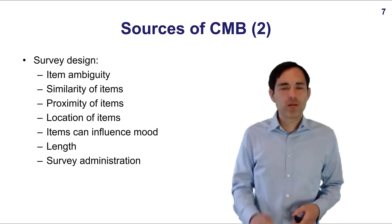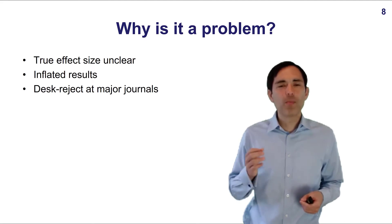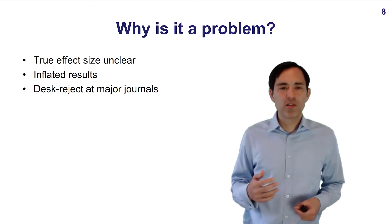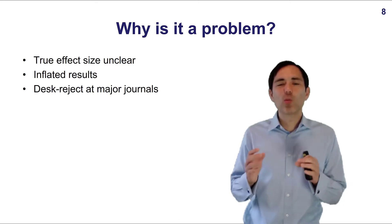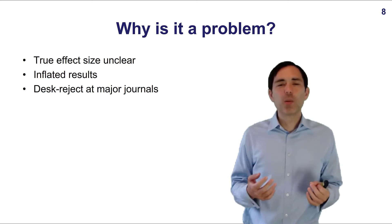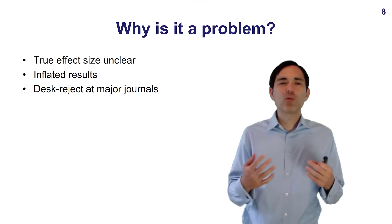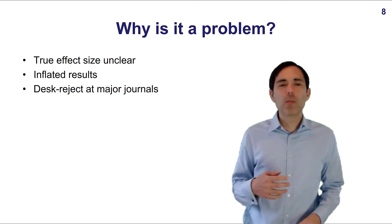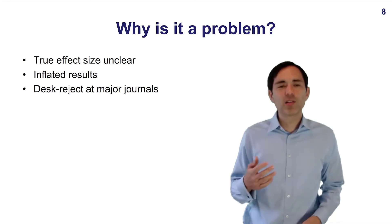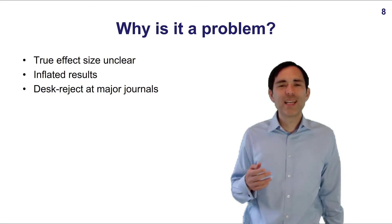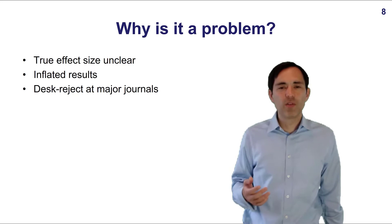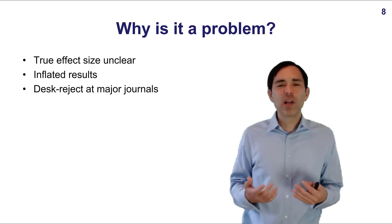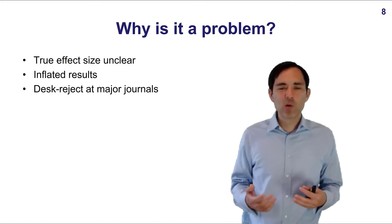Why is Common Method Bias a problem? Common Method Bias is a major challenge for several reasons. We don't know what the true effect size is between variables. Common Method Bias usually leads to inflated results — some studies even say that 25% or more of a relationship could be influenced by it. It creates clear methodological weaknesses, leading major journals to reject submissions. If all variables are assessed in one survey by the same person, you could be desk-rejected by major journals, and even lesser journals may view your submission less favorably.